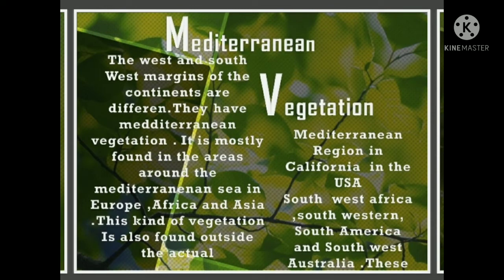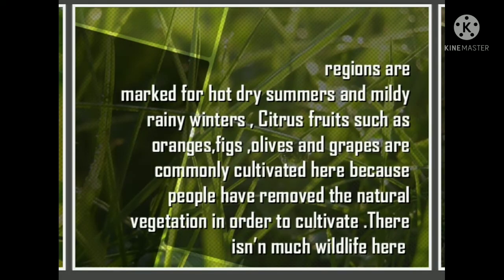Fifth, Mediterranean forests. The west and south margins of the continents have Mediterranean vegetation. It is mostly found in areas around the Mediterranean Sea — in Europe, Africa and Asia. This vegetation is also found in California in the USA, southwest Africa, southwest South America and southwest Australia. These regions are marked by hot dry summers and mildly rainy winters. Citrus fruits such as oranges, figs, olives and grapes are commonly cultivated here. Because people have removed the natural vegetation to cultivate, there is not much wildlife here.